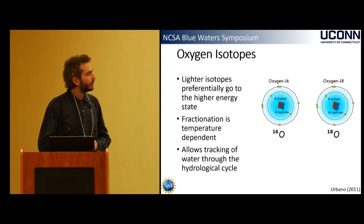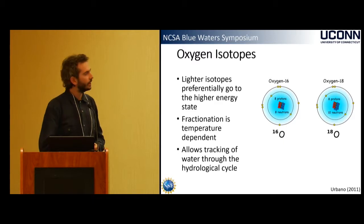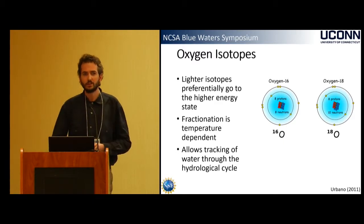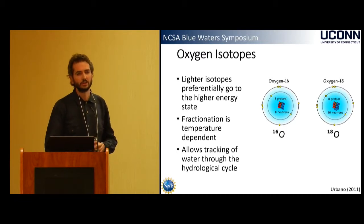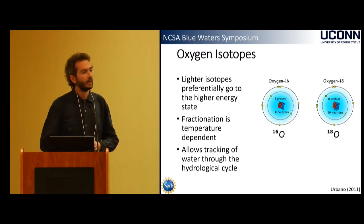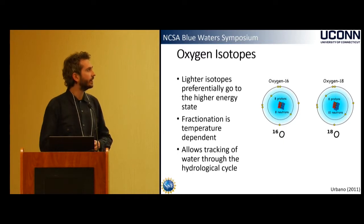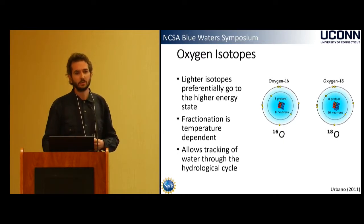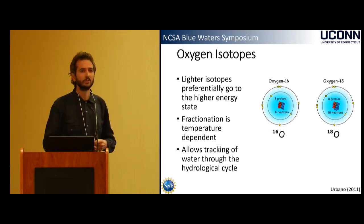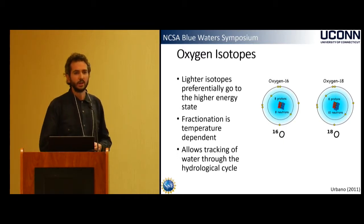I'll be talking about oxygen isotopes because some collaborators are looking at records involving oxygen isotopes, and we can also simulate them with the climate models. Oxygen-16 is the most abundant isotope, making up about 99.8% of all oxygen, with the remaining ~0.2% being oxygen-18. Both are stable isotopes — they don't decay — and their fractionation is dependent on temperature. They can be used as a tracer of hydrologic change, and because there are many proxies that contain oxygen, we can look at changes in oxygen isotopes within these proxies to understand how the hydrologic system has changed in the past.